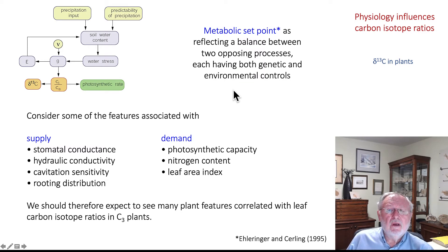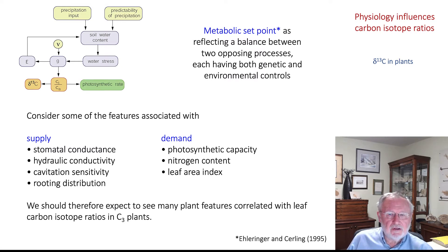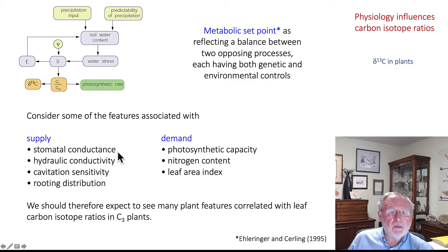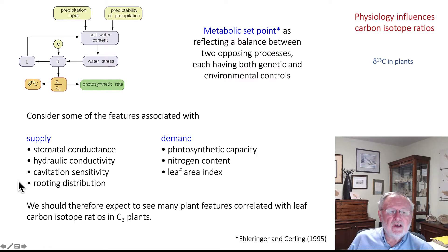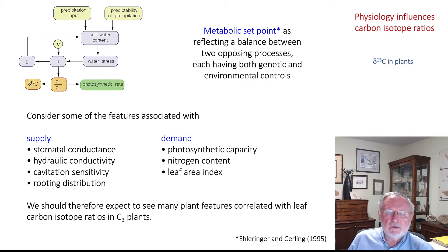This metabolic setpoint reflects a balance between two opposing forces: the supply of CO2 and the demand for CO2. There are genetic and environmental variations controlling the CI to CA ratio. Features associated with the supply include how wide open the stomates are, the hydraulic conductivity to water movement through the xylem, cavitation sensitivity, and rooting distribution. The demand for CO2 depends on photosynthetic rate and photosynthetic capacity, which are related to nitrogen content and frequently associated with leaf area index. We should expect to see many plant features correlated with leaf carbon isotope ratios because of the structural features associated with the demand and supply functions.